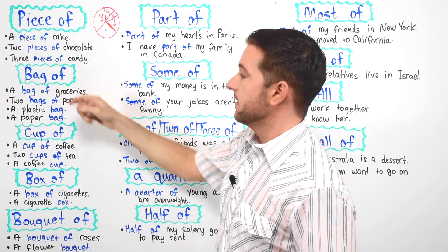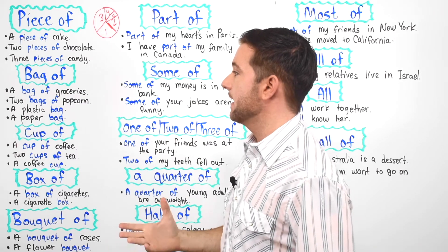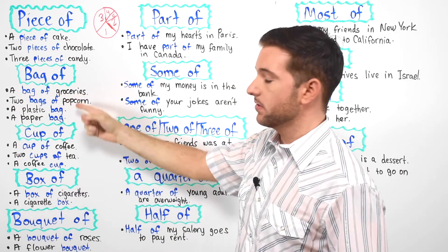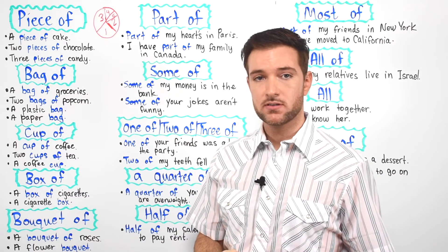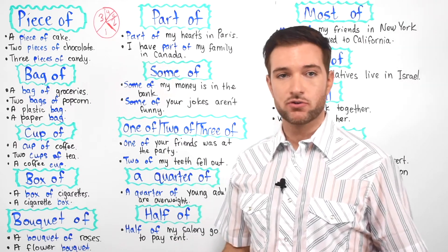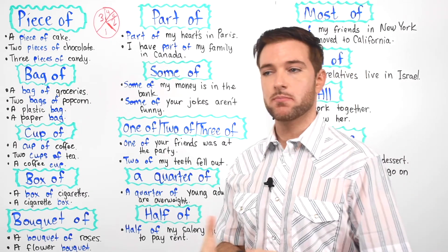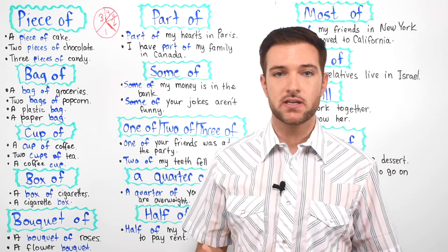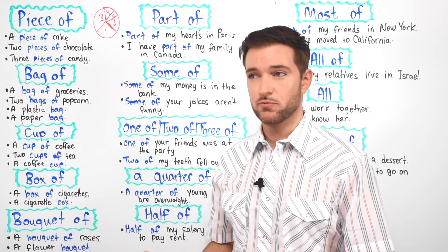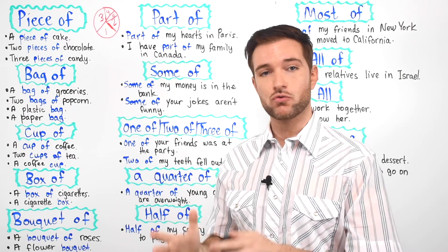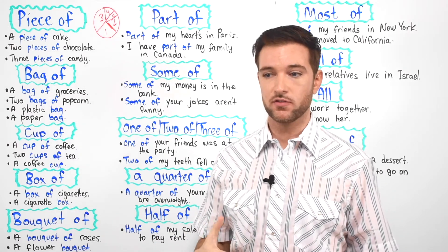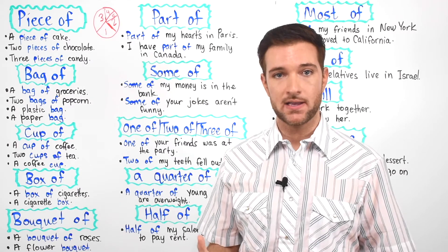Next we have "a bag of." For example, a bag of groceries — and remember that the word groceries is used in America. We say groceries for talking about food or things that you get at the supermarket. Remember in America, instead of saying supermarket, a lot of people say grocery store — it's a store full of groceries, the things that you buy so you can eat.